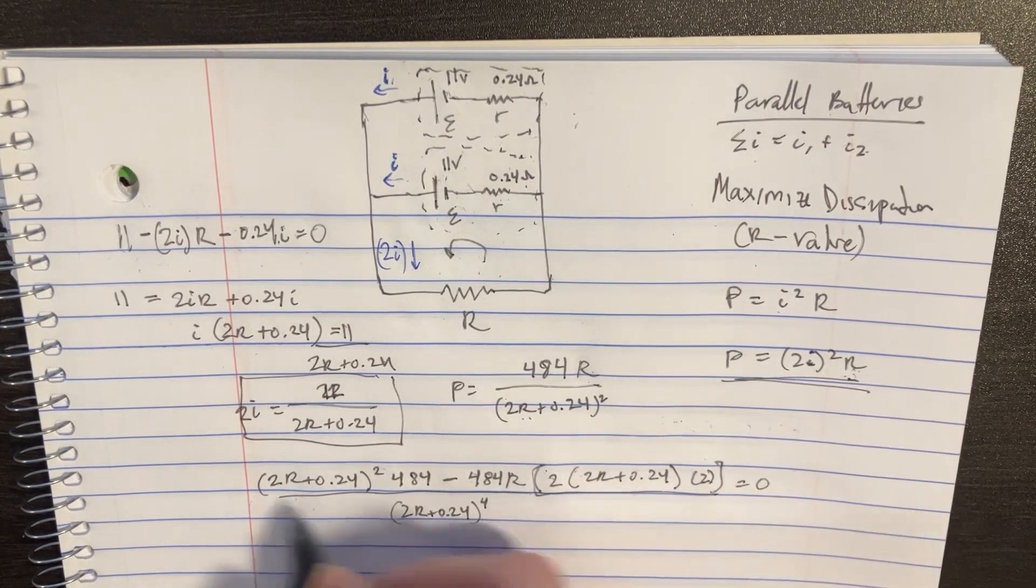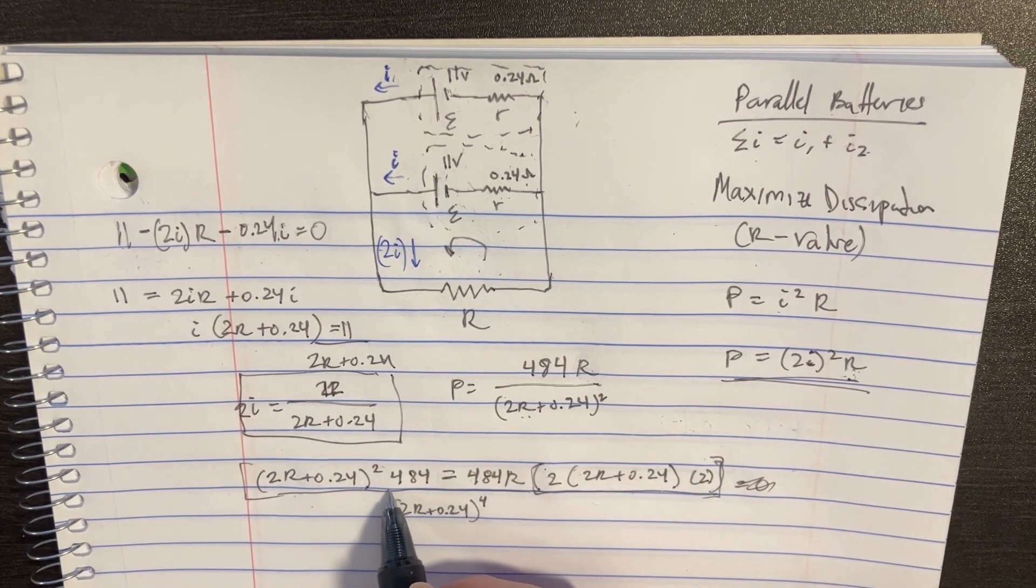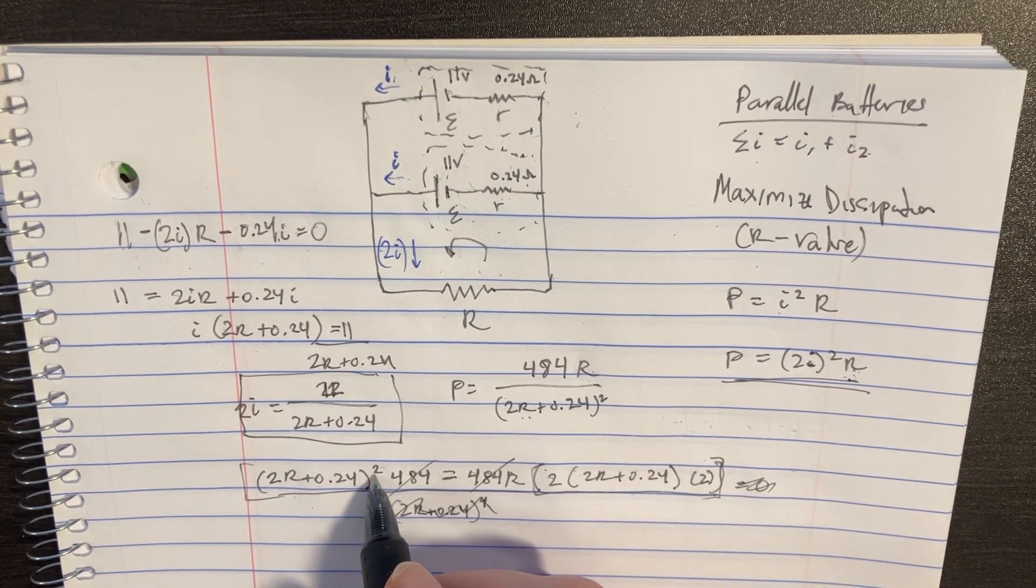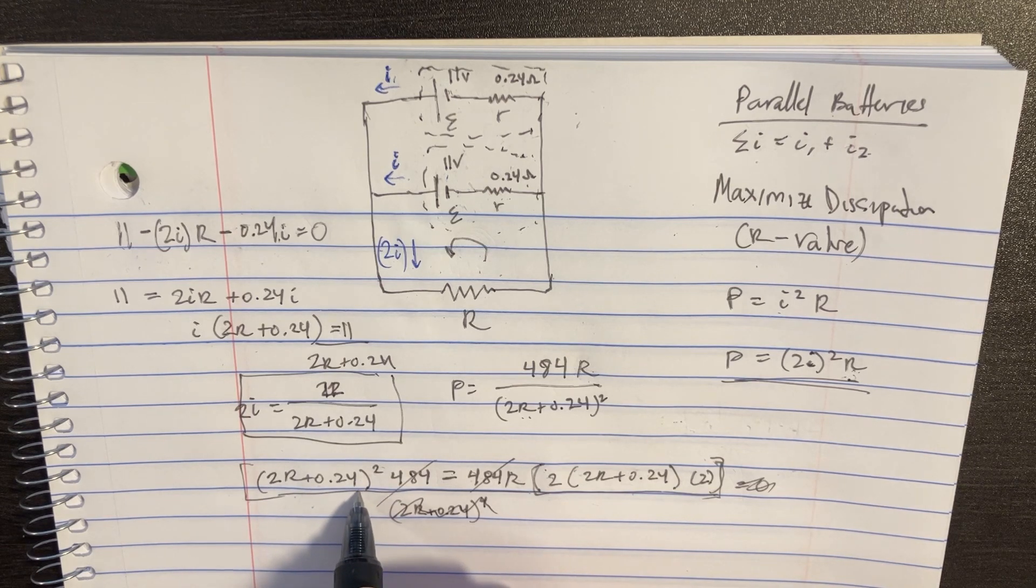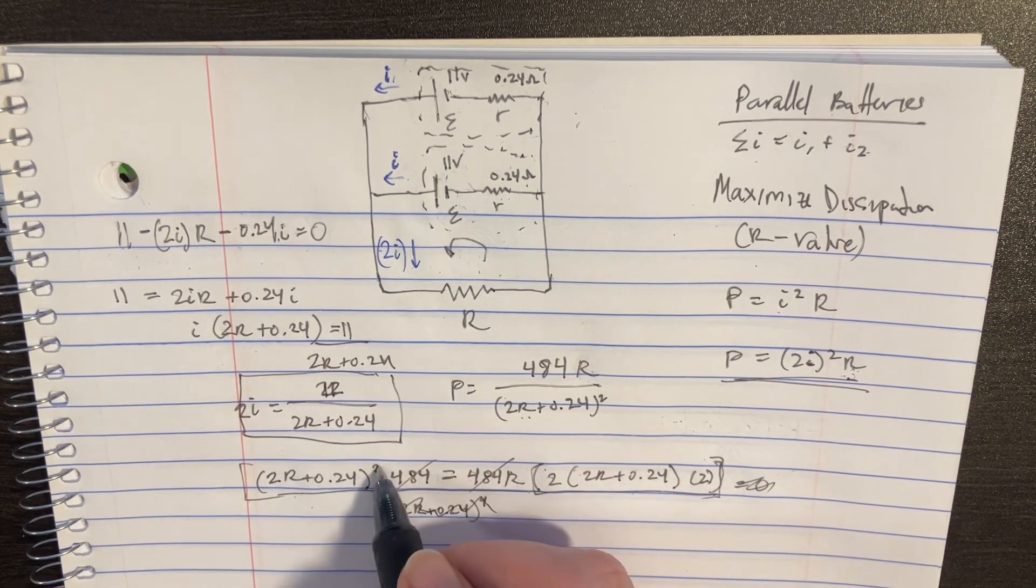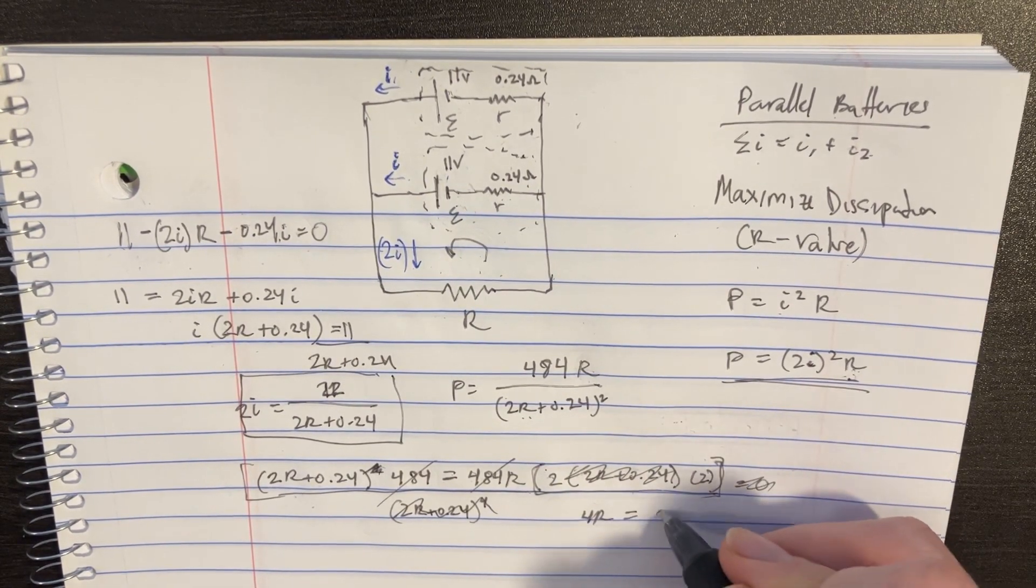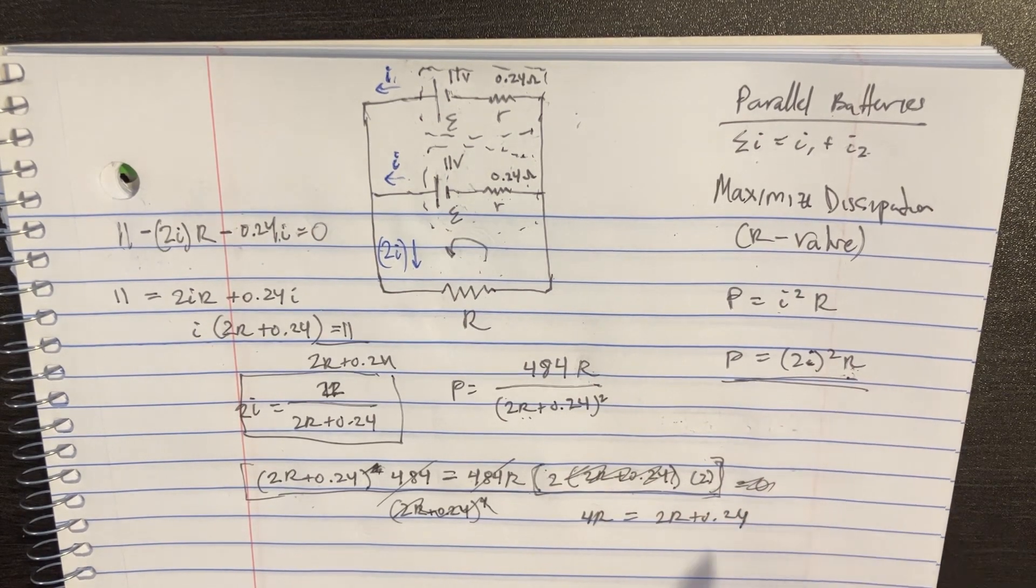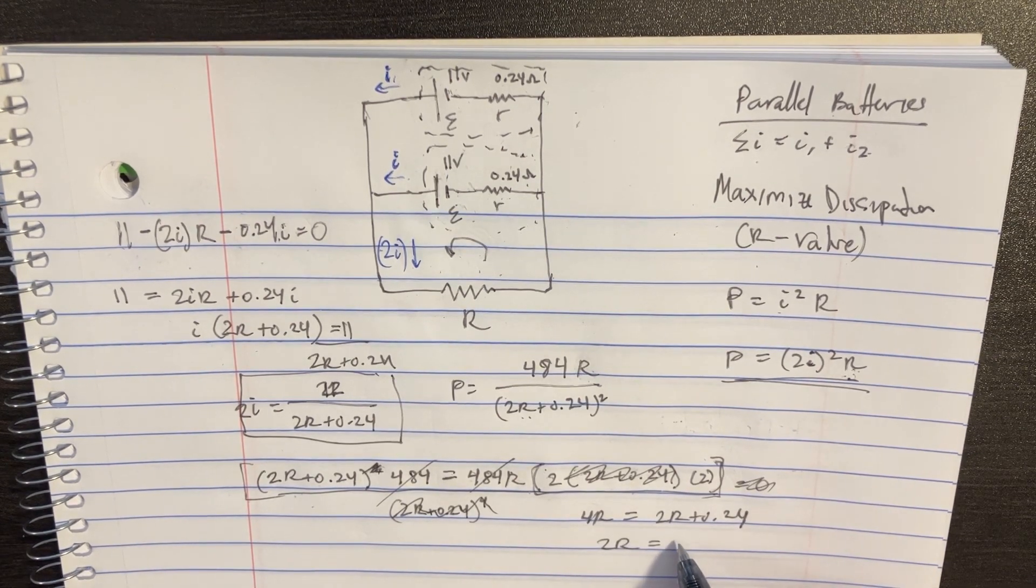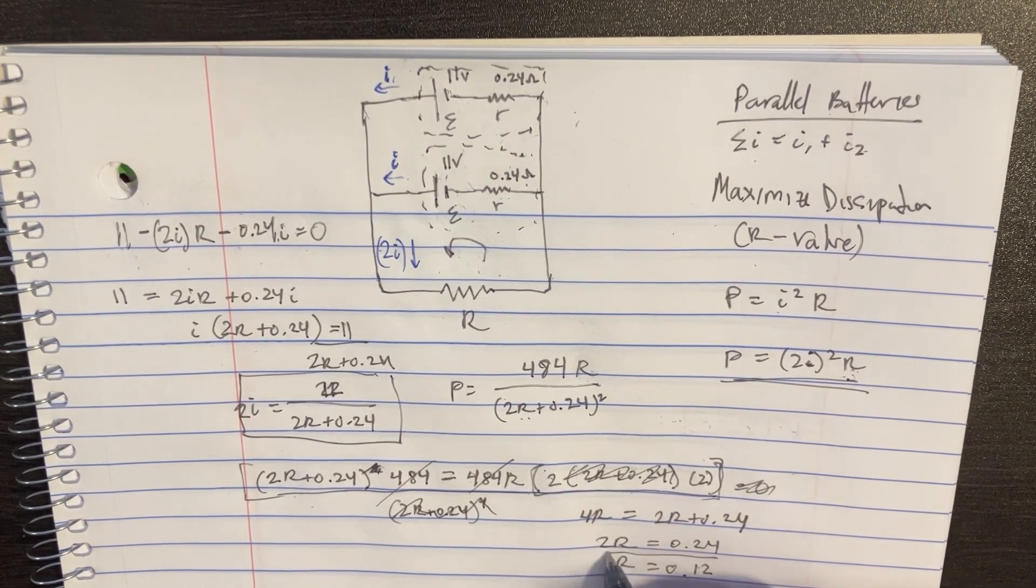And try to figure out this little portion. We can immediately divide both sides by 484, getting rid of that, by the way. And we can also divide each side by 2r plus 0.24. So we'll actually get something like this: 4r is equal to 2r plus 0.24, and then we can say 2r is equal to 0.24, meaning r is equal to 0.12. Awesome.